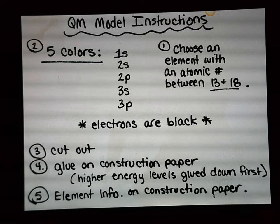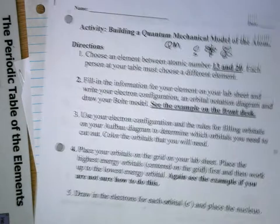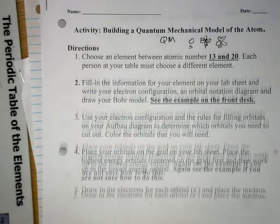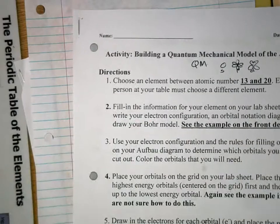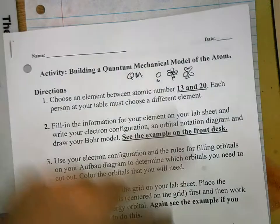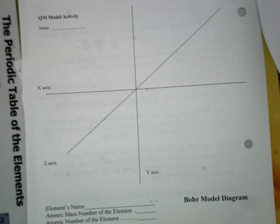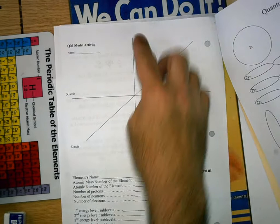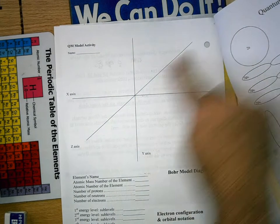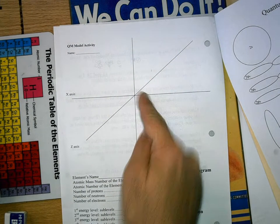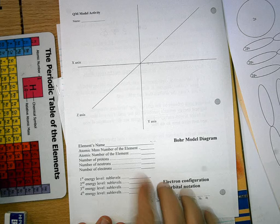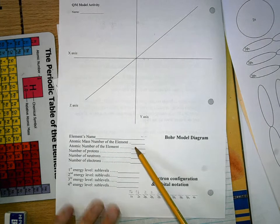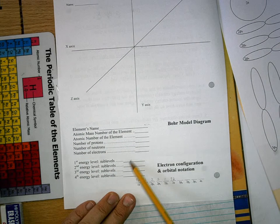When you turn this page over after you pick your element - and if you're absent you can just pick any one - turn to the second page of the packet. We've got our x-axis, y-axis, and z-axis. The z-axis is the axis coming out towards us. You're going to write the name of your element, the atomic mass, atomic number, protons - all this information.